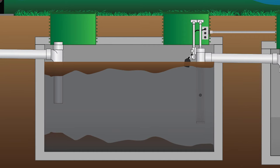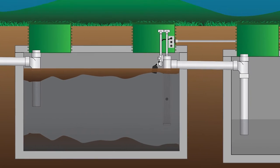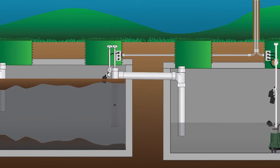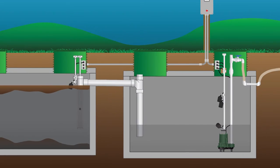Idaho requirements for effluent filters are an interesting discussion. Effluent filters are not required in Idaho for gravity flow septic systems — if your septic tank is connected directly to the drain field with no pumping equipment, you can install a sanitary tee on the discharge end. However, you are required to have an Idaho-approved screening device before any effluent pump that pumps to the drain field.